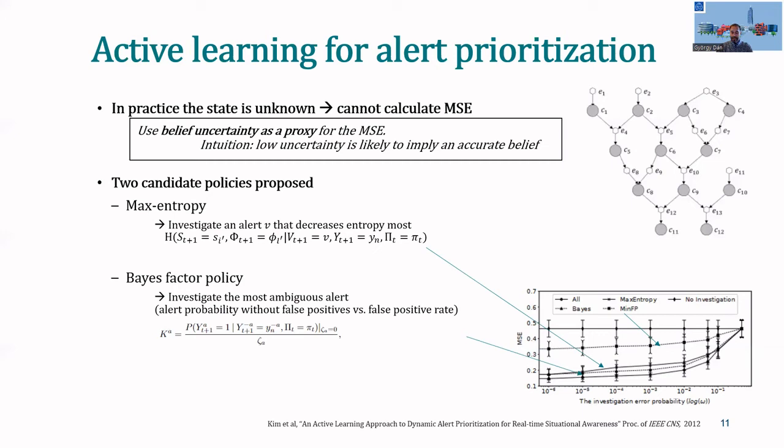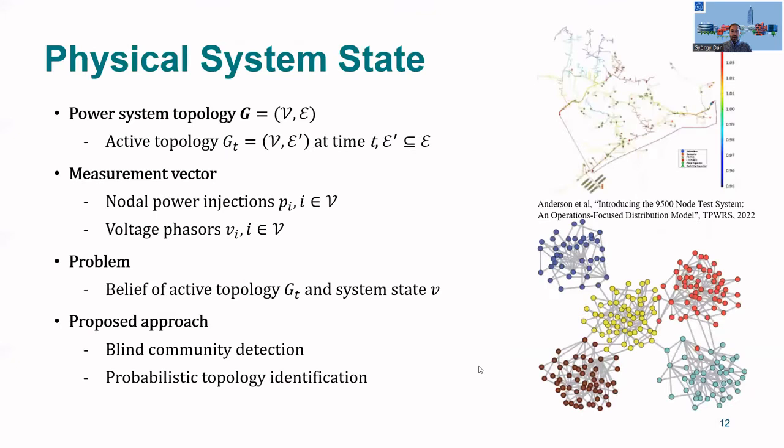The alternative policy we propose, called the Bayes factor policy, investigates the alert that is most ambiguous given what we know about the system. We evaluated these policies on an example system, and at the bottom right I show you results that show the estimation error as a function of the investigation error probability. And what you can see here is that the error of the two proposed policies is about 10 to 20% of the error of the alternate policies, which, for example, are to investigate always the alert that has the lowest false positive rate.